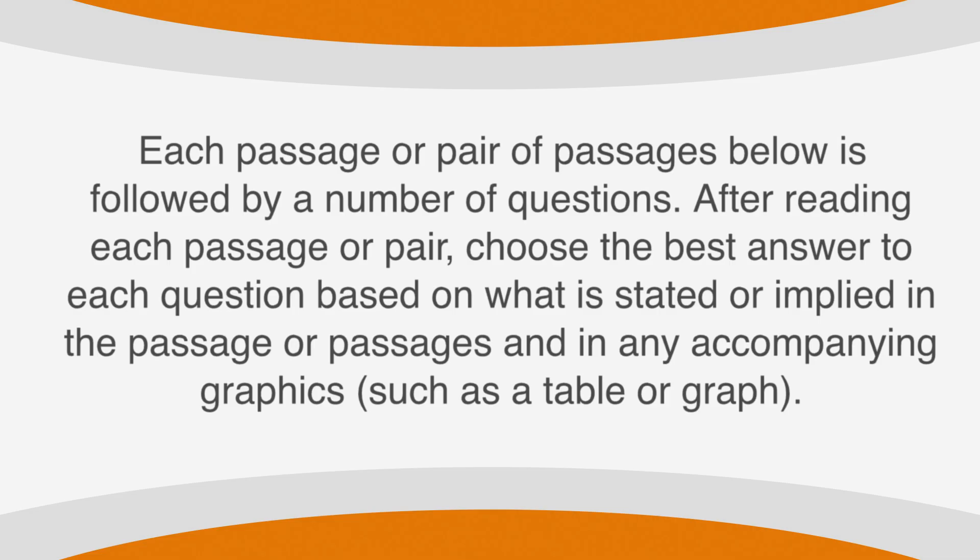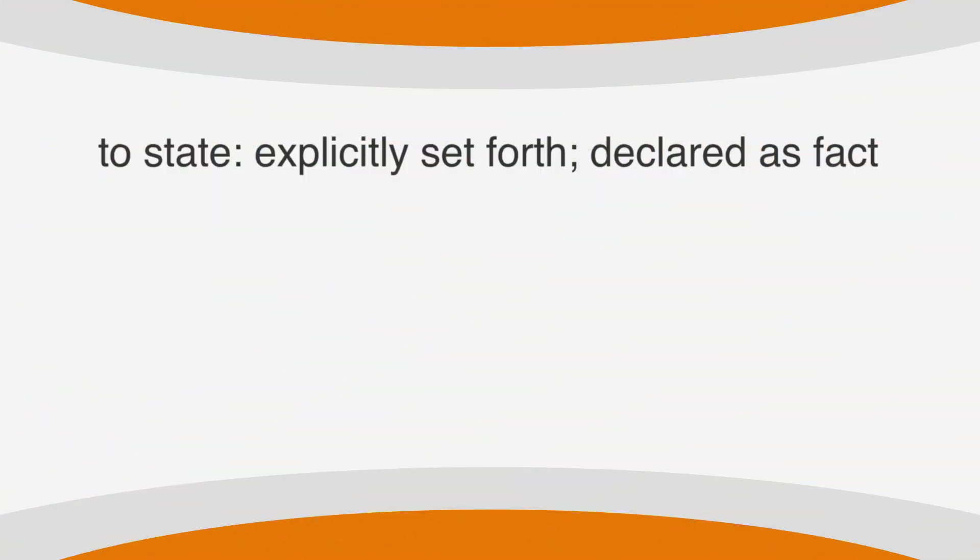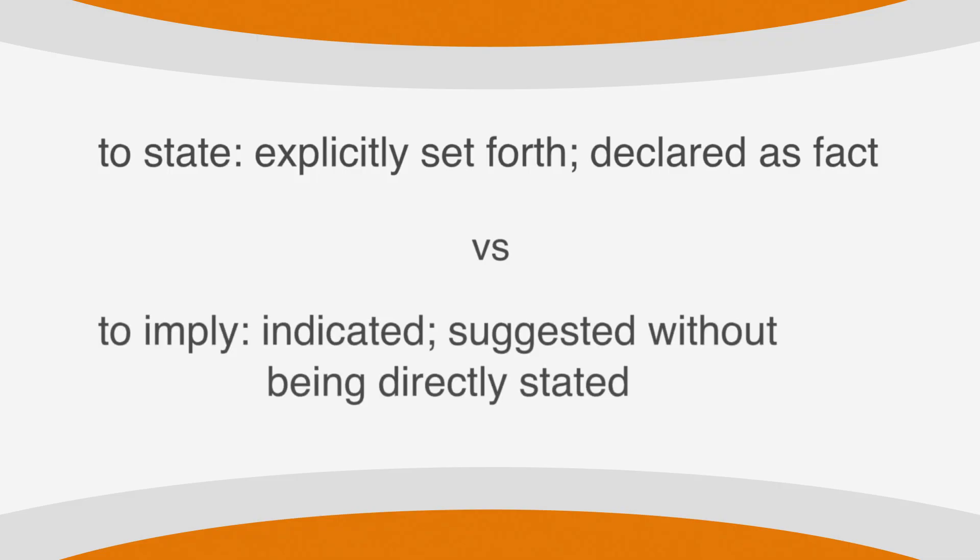How is this information useful? I'm glad you asked. The key words in the instructions are stated and implied. When something is stated, it's explicitly set forth and declared as fact. When something is implied, it's indicated or suggested without being directly stated. For our purposes, it speaks to the main idea of the passage.